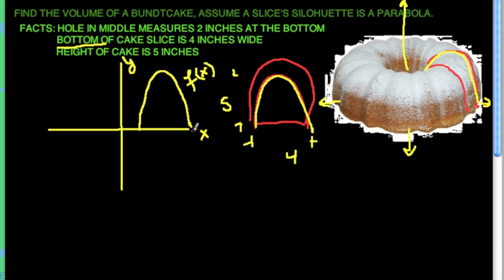I'm going to write this as f of x. That's the equation of this parabola from x equals one to x equals five. And why is this x equals one? It's because of this fact here. The middle measures two inches, right?